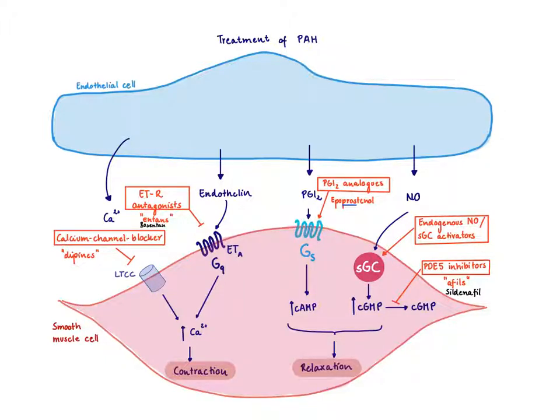There's also a soluble guanylate cyclase activator called riociguat. There's also the option to prevent the breakdown of cyclic GMP with a PDE5 inhibitor. These are all the famous -afils, like sildenafil. These are used for the treatment of pulmonary hypertension, not only for the treatment of erectile dysfunction.